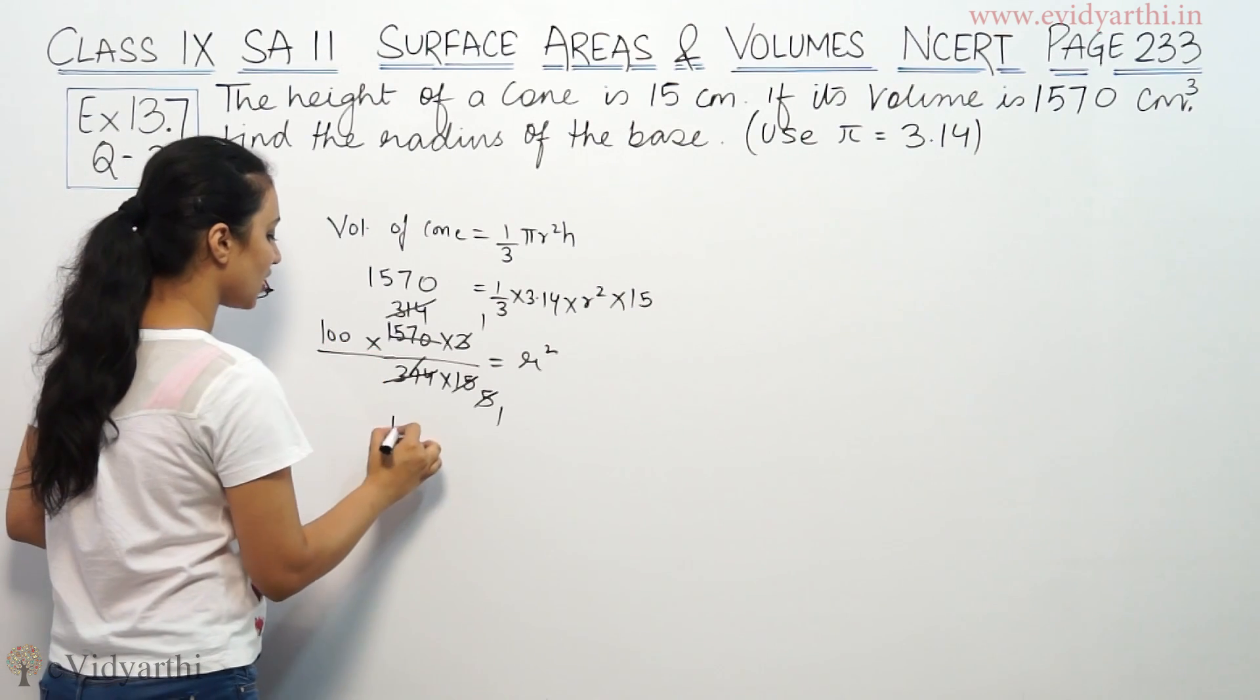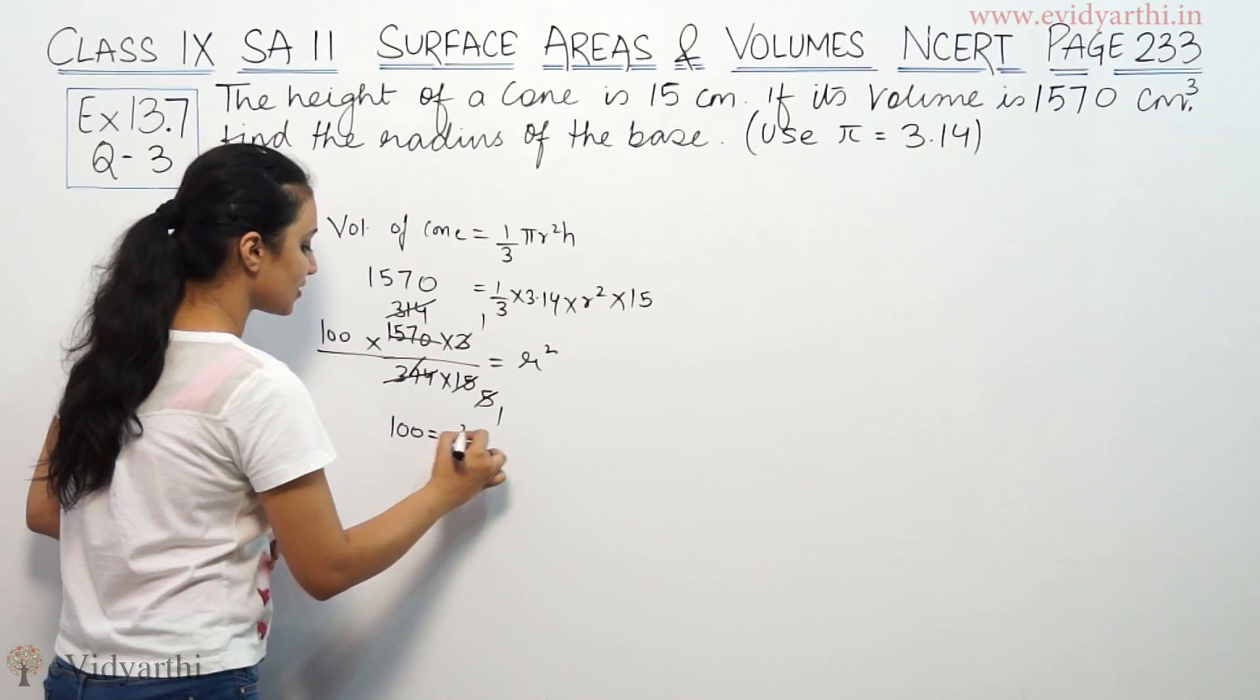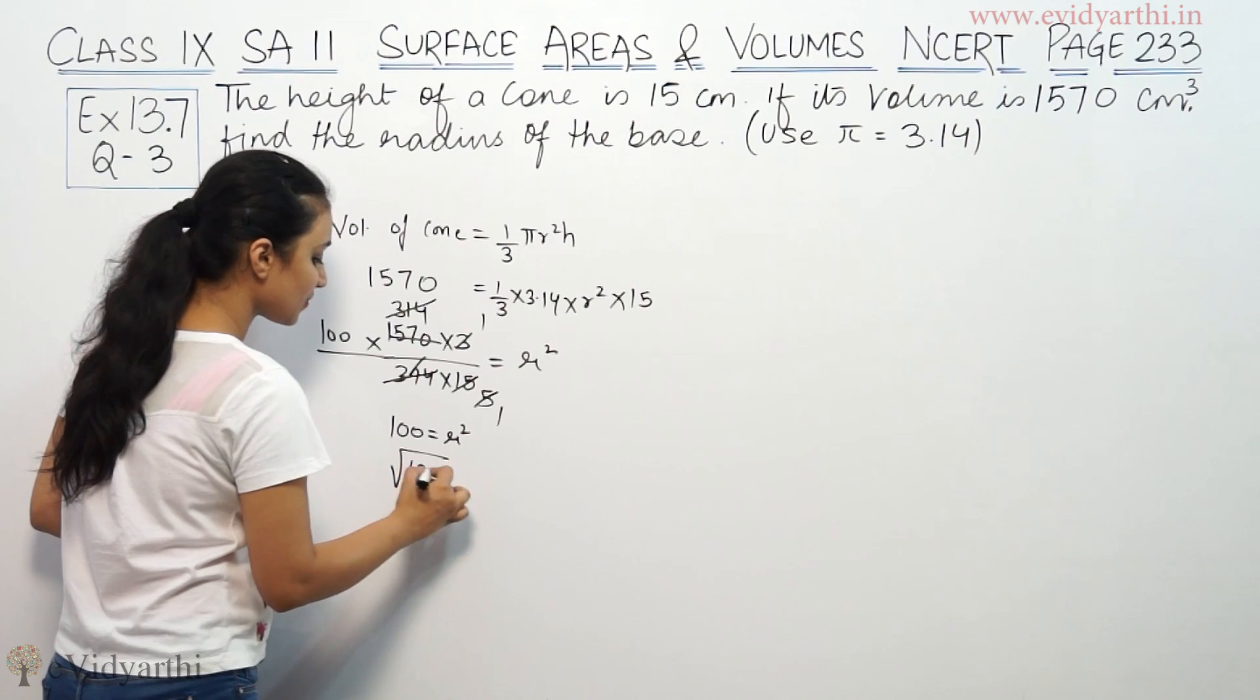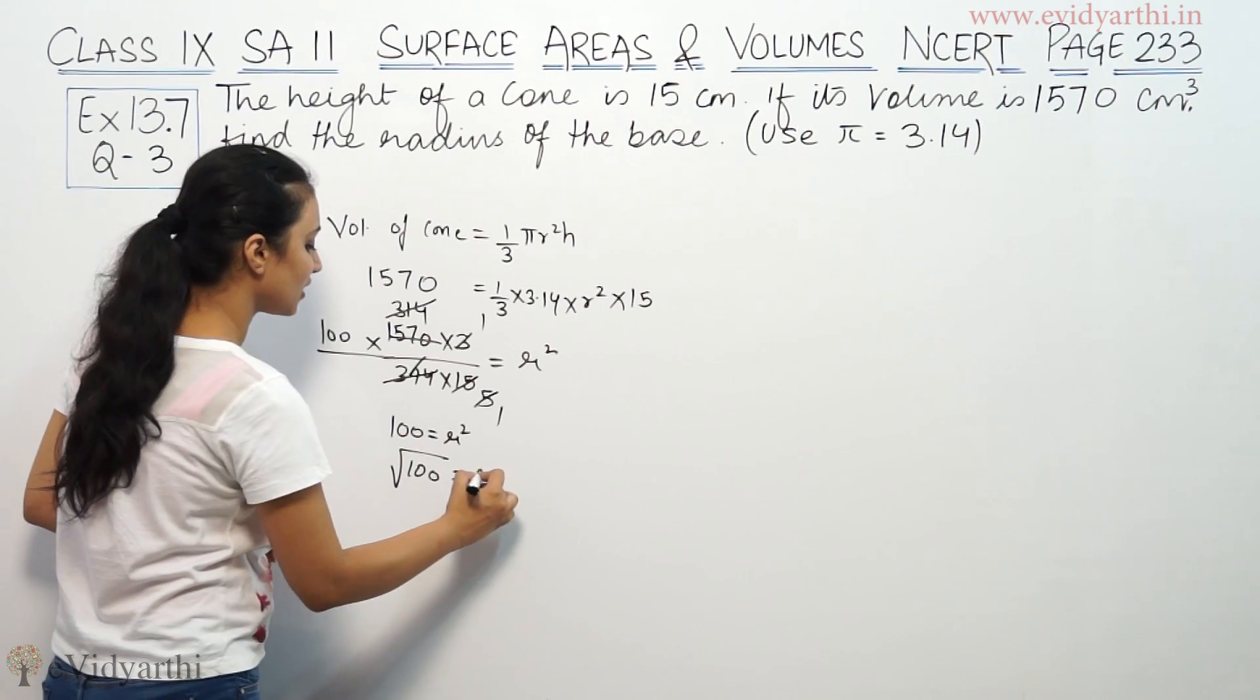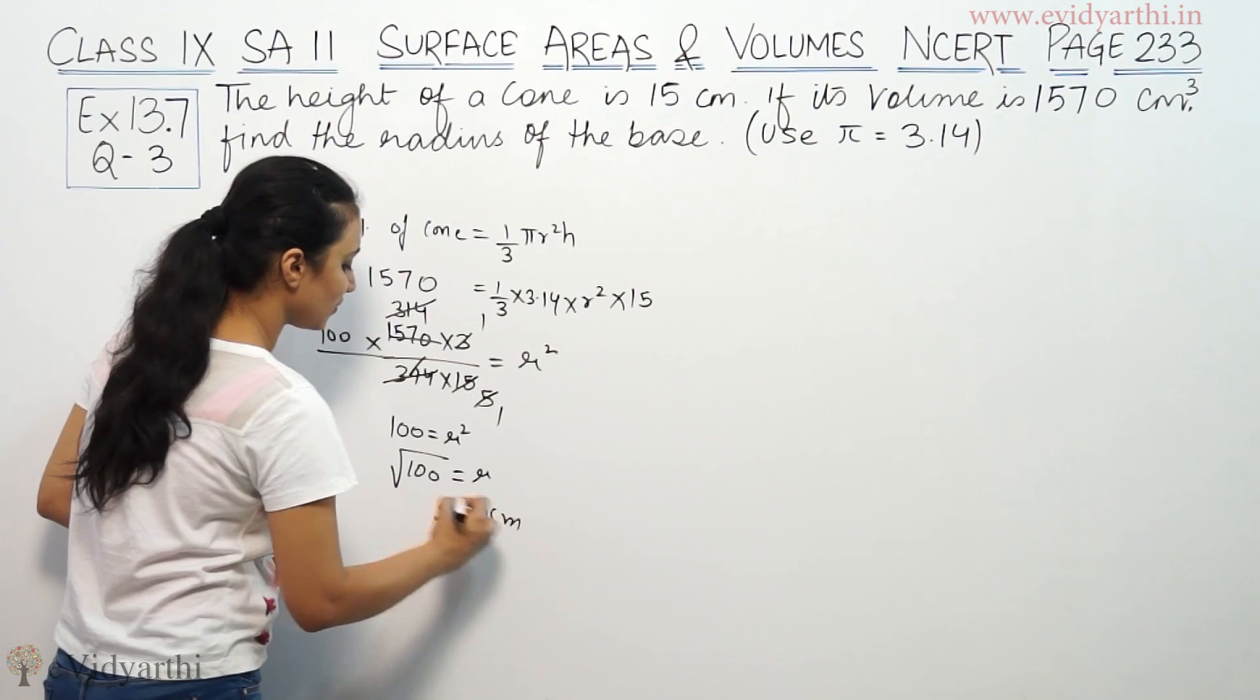After cancelling, 100 equals r². Taking the square root of both sides, radius will be equal to 10 cm.